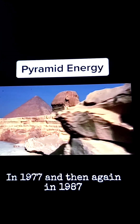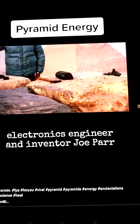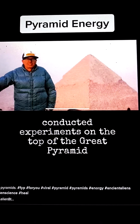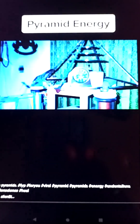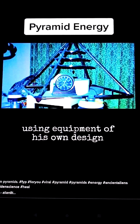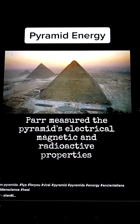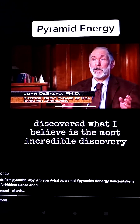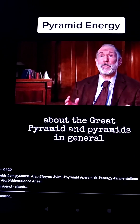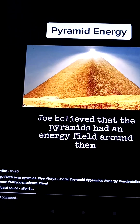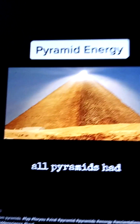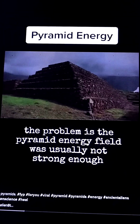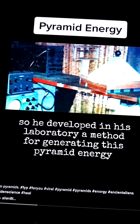In 1977, and again in 1987, electronics engineer and inventor Joe Parr conducted experiments on top of the Great Pyramid. Using equipment of his own design, Parr measured the pyramid's electrical, magnetic, and radioactive properties. Joe Parr, my very close friend and research colleague, discovered what I believe is the most incredible discovery about the Great Pyramid and pyramids in general. He believed all pyramids had an energy field around them, though the problem was the pyramid energy field was usually not strong enough, so he developed a laboratory method for generating this pyramid energy to do scientific studies on it.